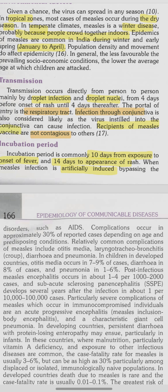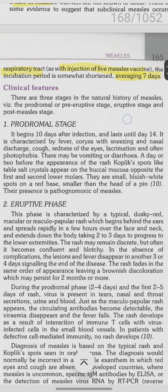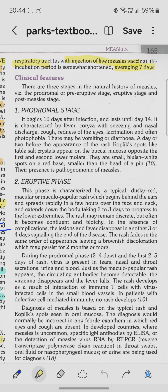The incubation period is from the entry of infection into the body to the onset of signs and symptoms. For fever it is 10 days, and for the appearance of rash it is 14 days. If artificially induced by bypassing the respiratory tract, such as by injection of live measles vaccine, the incubation period is seven days.